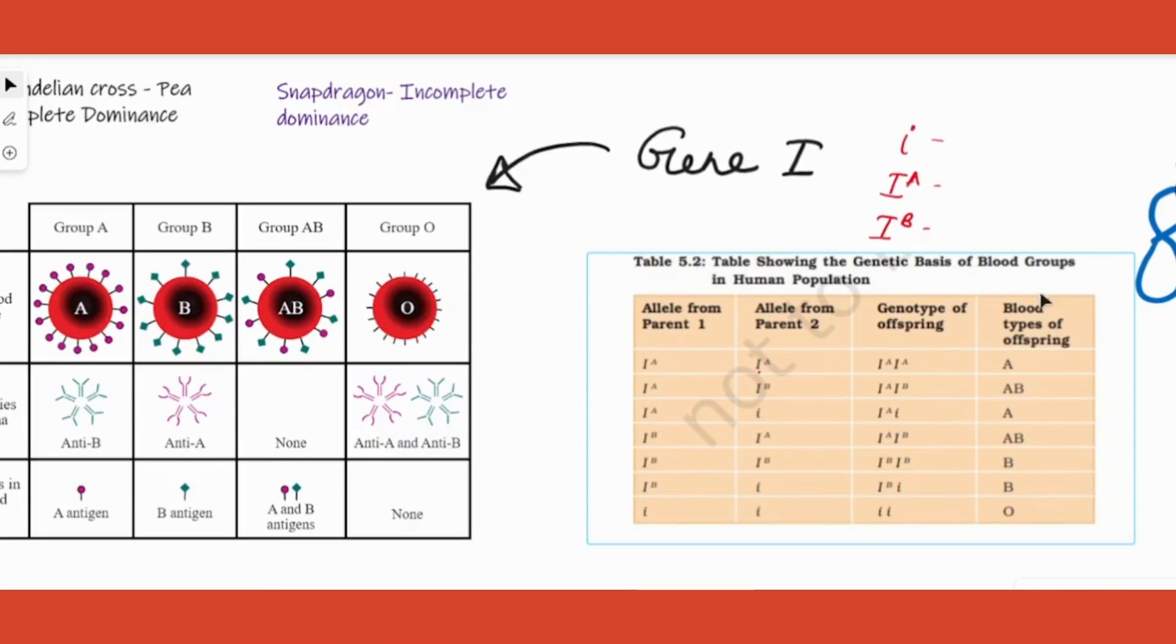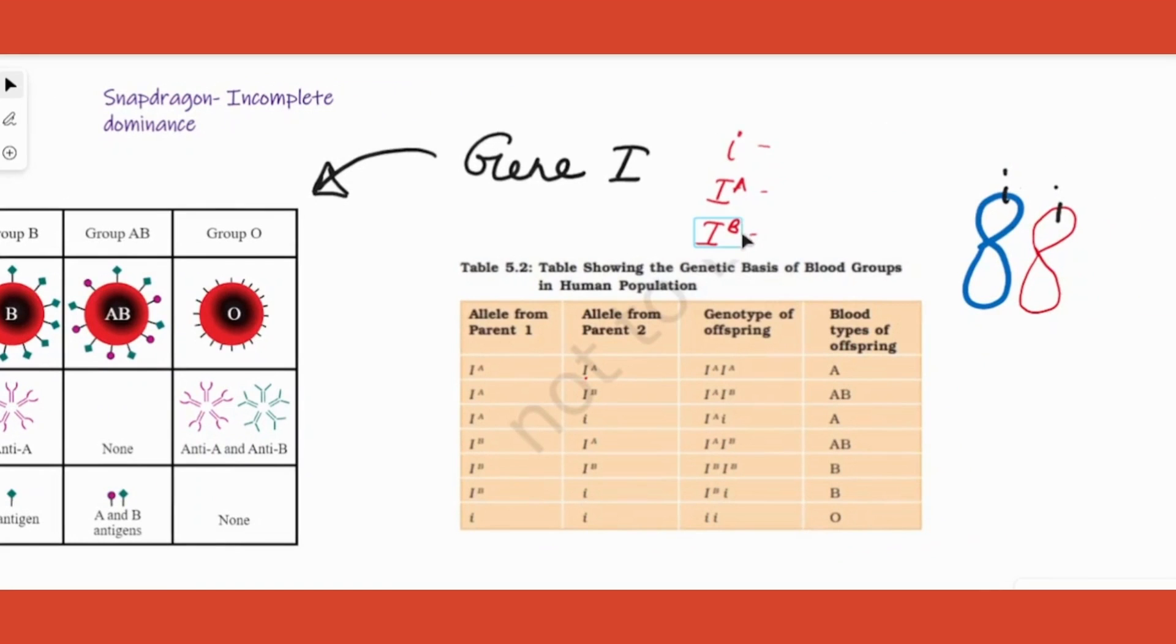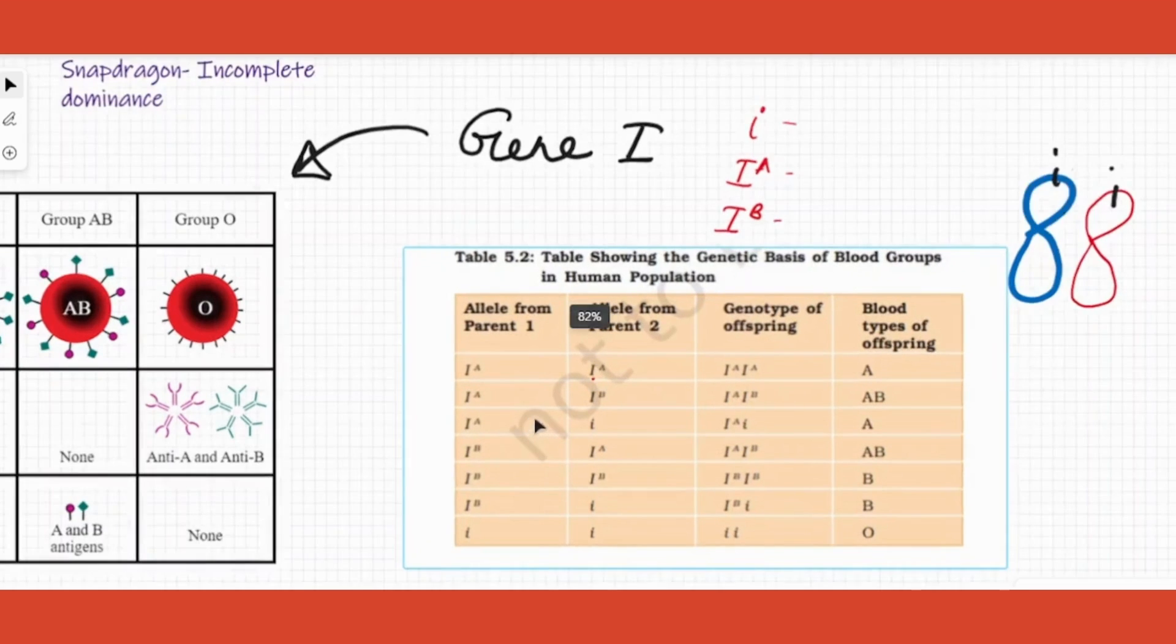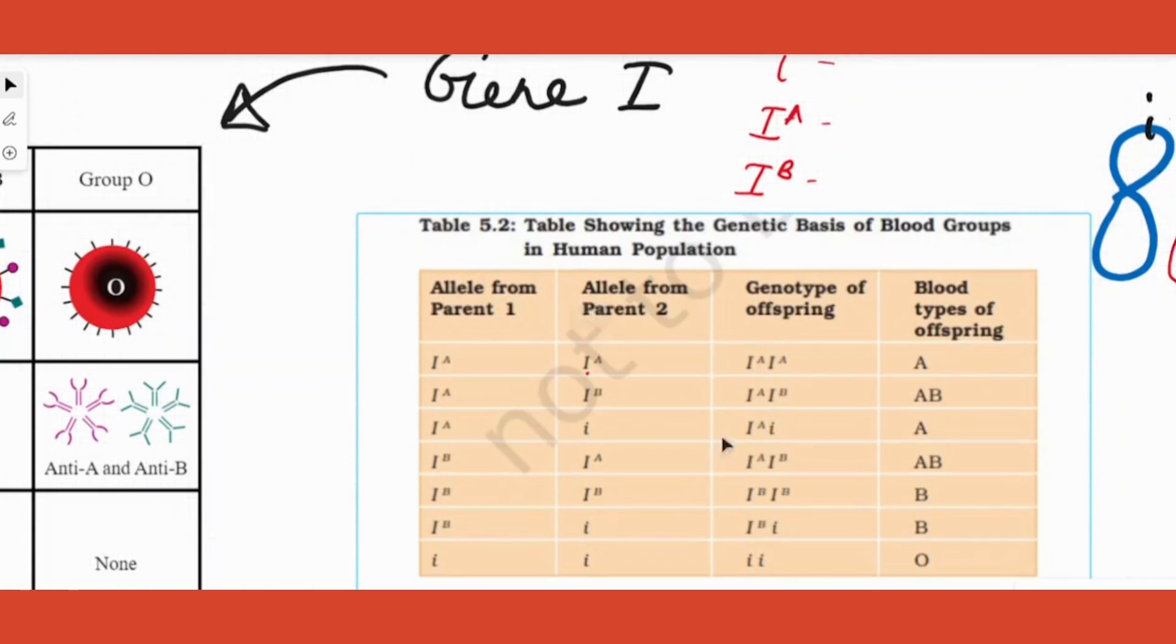I'll repeat this part: among the three alleles I, IA, or IB, only two can be present on our chromosome, resulting in a combined effect, both being dominant. If I have this on one chromosome and this on another chromosome, the combined effect is therefore A as a blood group.